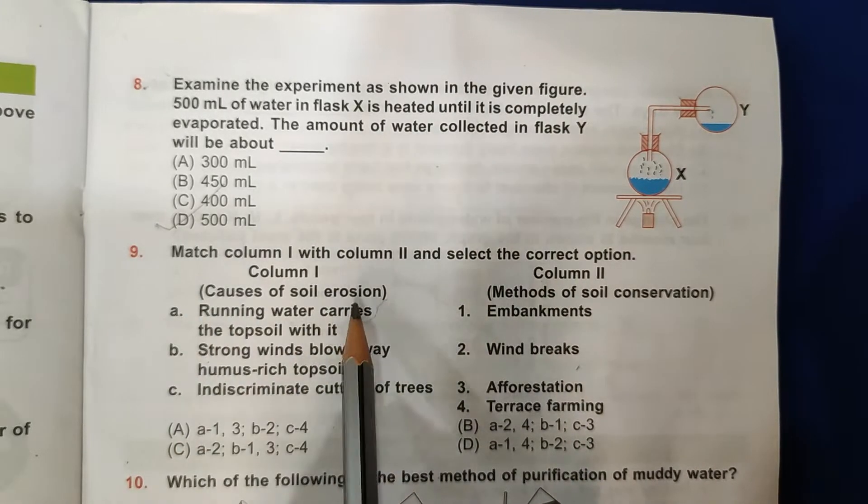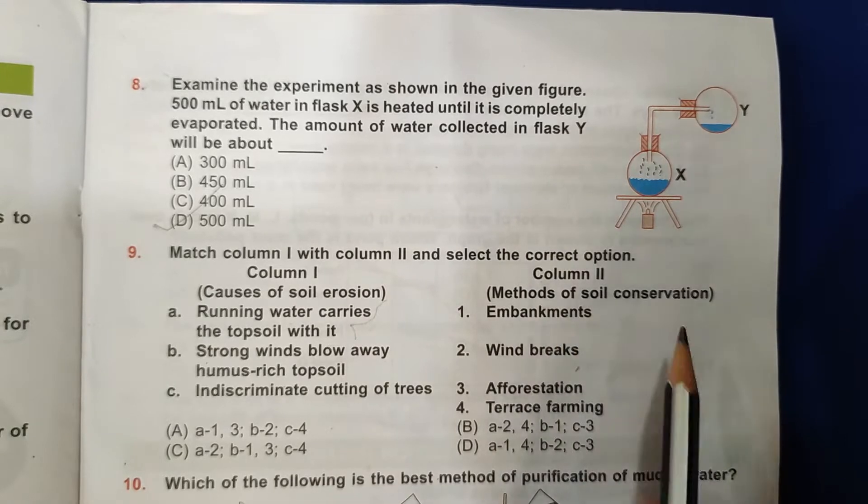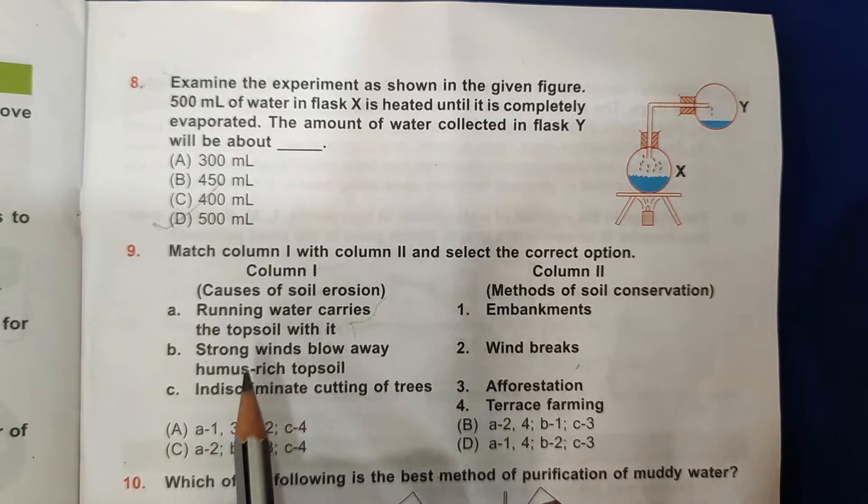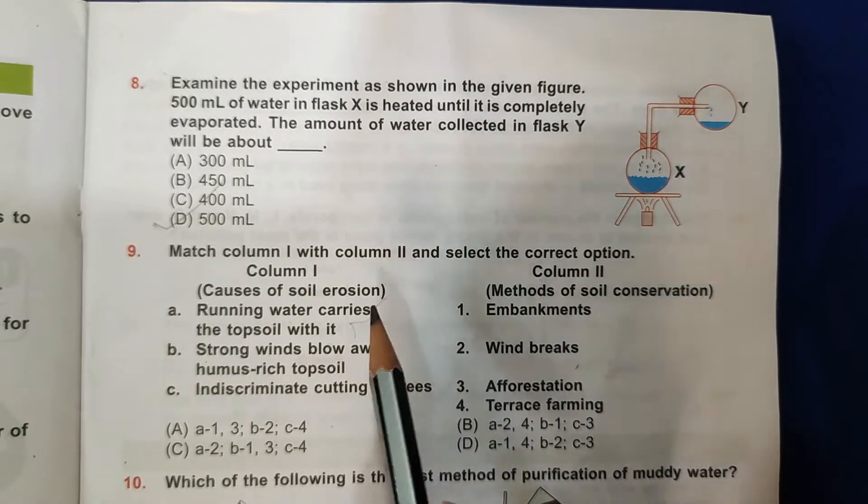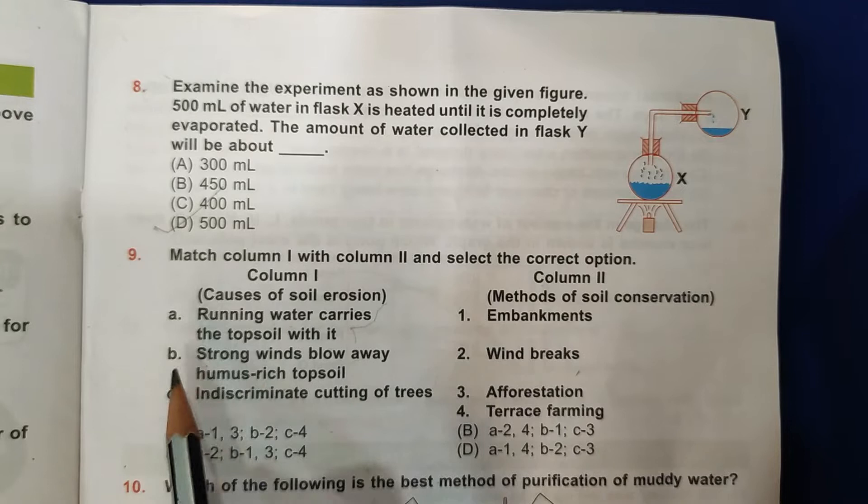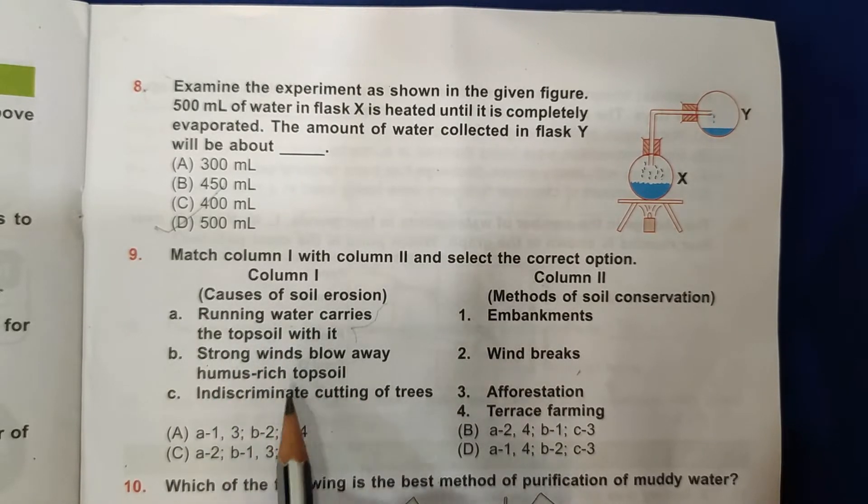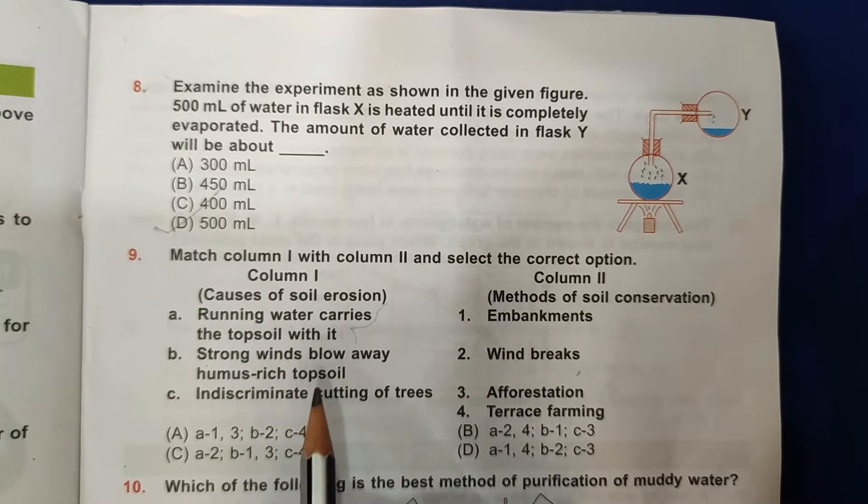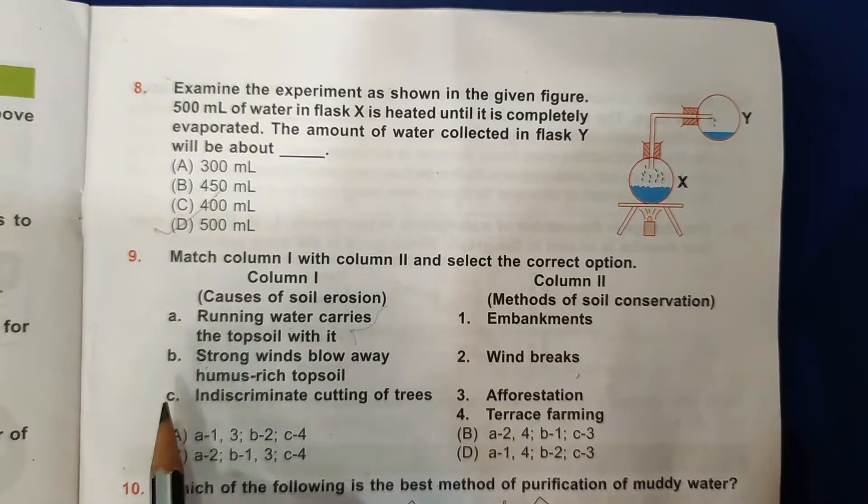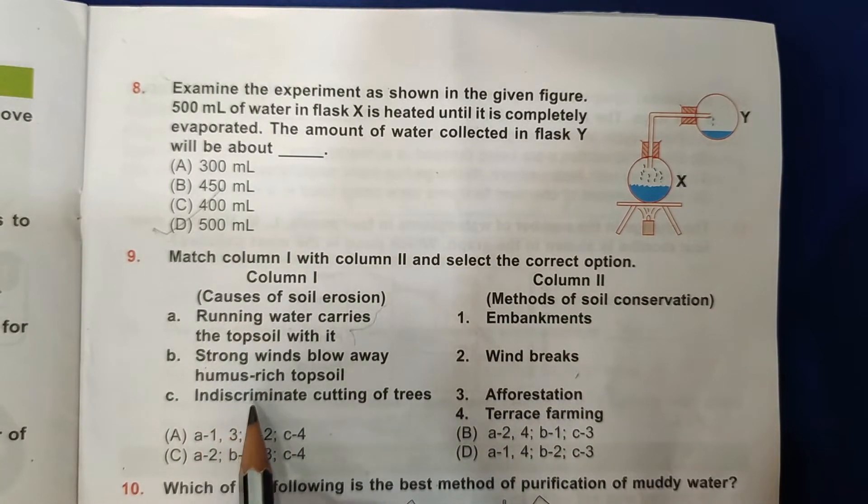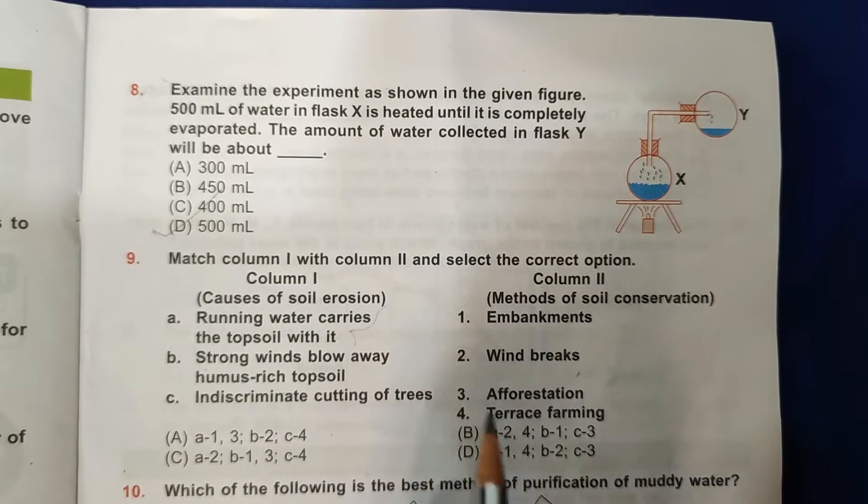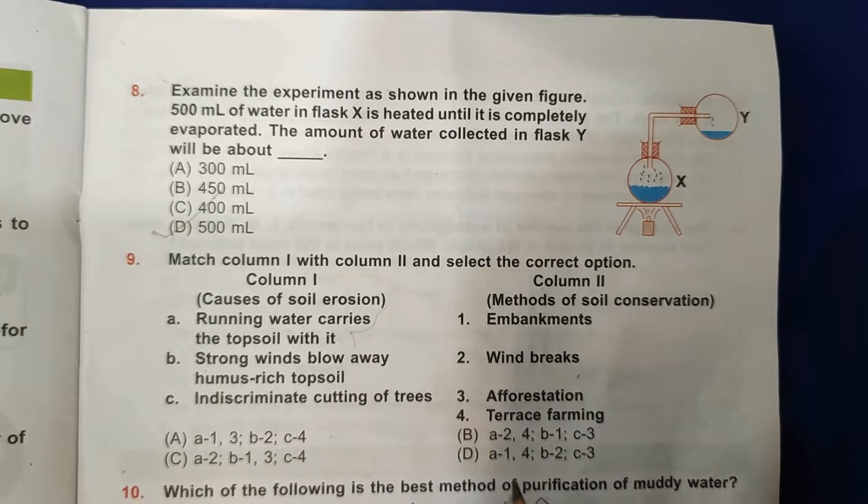Then ninth question: Match column 1 with column 2 and select the correct option. So here are causes of soil erosion and here are methods of soil conservation. A: Running water carries the topsoil with it, so methods are embankments and terrace farming, so 1 and 4. B: Strong winds blow away humus-rich topsoil, so method is windbreaks, and B-2.